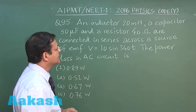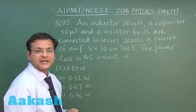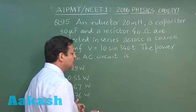This is peak value, you can calculate the rms value. For power loss in AC circuit, you can always use I rms square r.